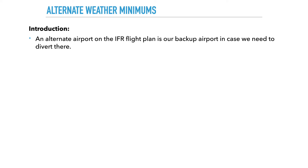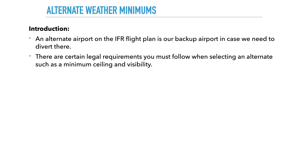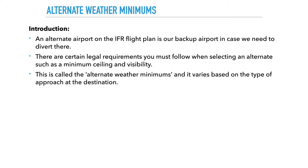Before we get into it, let's do a quick introduction. An alternate airport on the IFR flight plan is our backup airport, just in case we need to divert there. There are certain legal requirements you must take into account when selecting an alternate airport, such as the ceiling and visibility. When you do take that into account, those are known as the alternate weather minimums, and those minimums actually vary based on the approach at the destination.